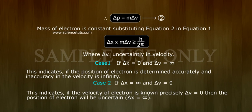Δp = m × Δv. Equation 2. Mass of electron is constant. Substituting Equation 2 in Equation 1: Δx × m × Δv ≥ h/2π.